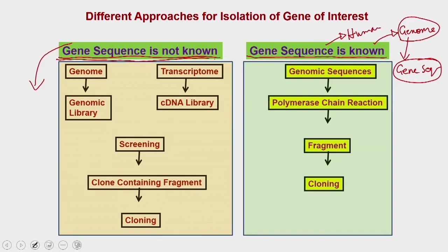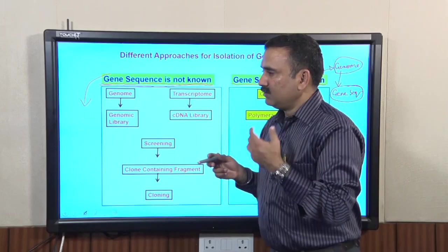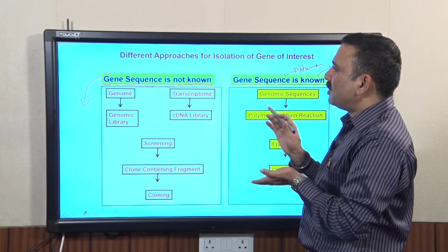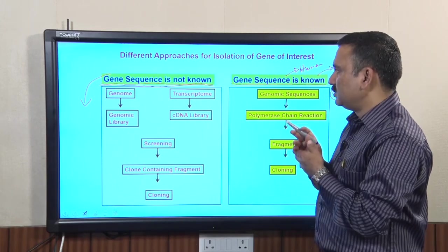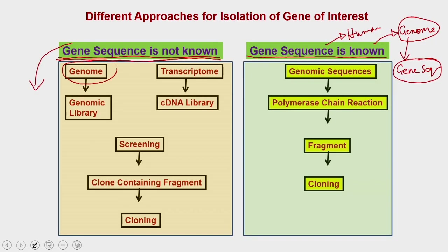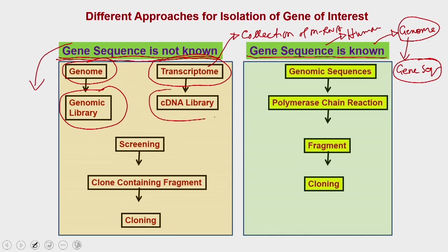The first approach was used before the genomic era, to isolate a gene based on its trait. In this approach, you have two sources to isolate a gene sequence: the whole genome, or the transcriptome — which is the collection of messenger RNA. For the genome you prepare a genomic library; for the transcriptome, you prepare a cDNA library.